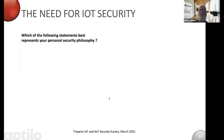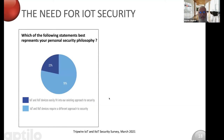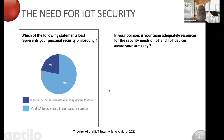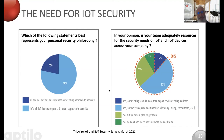Two more questions from the survey. Which security philosophy best represents you? 78% believe that security for IoT requires a different approach from what their enterprise or industrial environment currently has in place — you cannot simply take what you have today and extend it to IoT. And the last question: do you have the right resources, know-how, and people to deal with IoT security across the company? 88% said either no, or yes but we need some help.